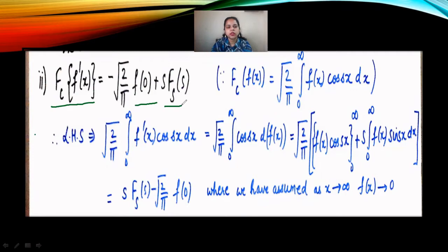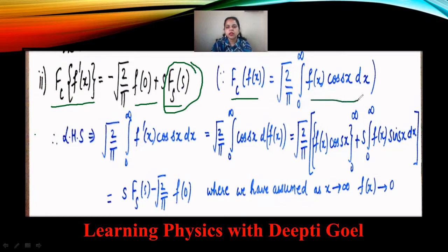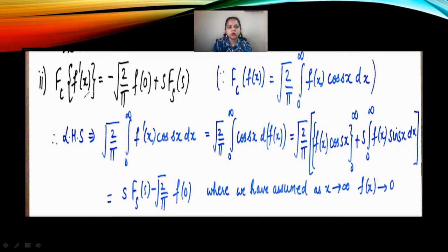On application of the Fourier Cosine Transform on the first order derivative, we get the Fourier Sine Transform in the result — that is the interesting feature of this application. The Fourier Cosine Transform of a function is defined as root 2 by pi integral from 0 to infinity of f(x) cos(sx) dx. Taking the left hand side and applying this definition, the function is now our derivative f'(x), so it is root 2 by pi integral 0 to infinity of f'(x) cos(sx) dx.